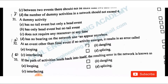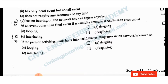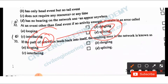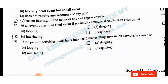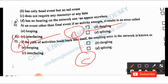At any event other than the final event, if no activity emerges, it results in an error called dangling. If the path of an activity leads back into itself, the error in the network is known as looping. So looping is when the path cycles back, and dangling is when an activity does not connect to the final event.